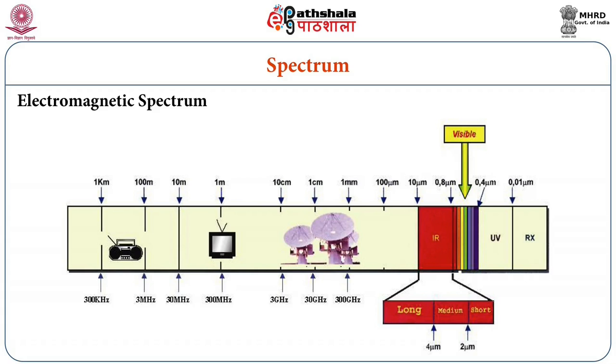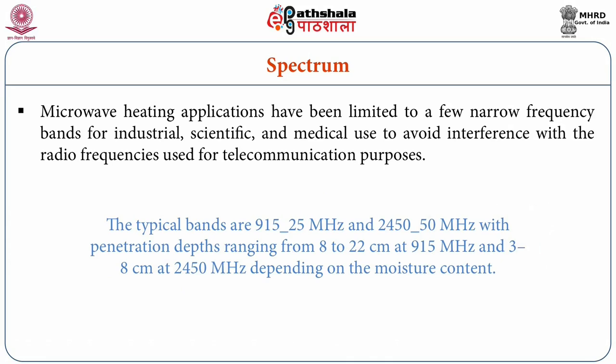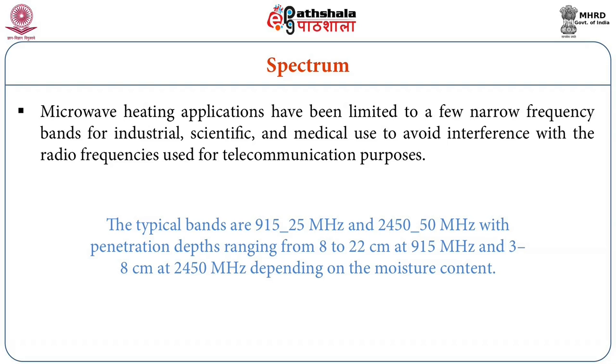From 300 megahertz to 3000 gigahertz you can see how microwave heating is used for food applications. The penetration power differs at 915 megahertz versus 2450 megahertz. When using microwave heating, the product is uniformly heated throughout - uniform heat transfer takes place and uniform quality is achieved at the end of microwave heating.